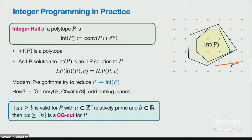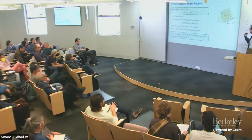From a cutting plane ax ≥ B, we can derive ax ≥ ⌈B⌉ (the ceiling of B), because if any integer point satisfies ax ≥ B and the coefficients a are integers, then any solution also satisfies ax ≥ ⌈B⌉. The relatively prime condition is not strictly necessary for validity, but it gives a nice optimality property.